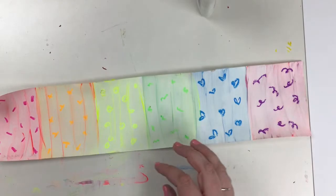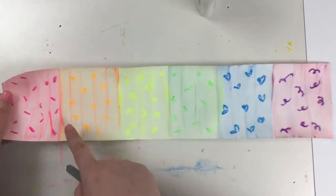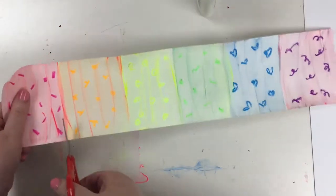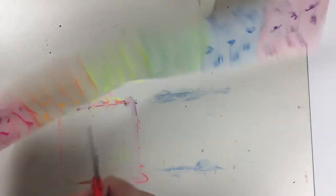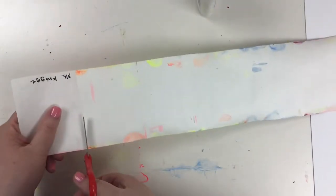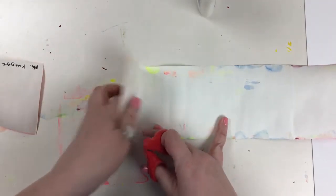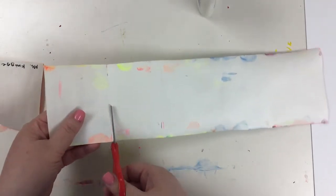So first, using our scissors, we're going to cut each rectangle. You can see where the fold line is. If you flip it over, you can just cut where it's folded.